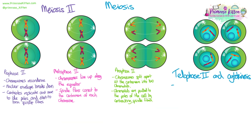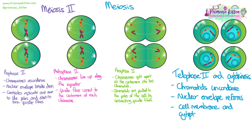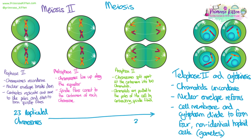Telophase two and cytokinesis: the chromatids start to uncondense, the nuclear envelope reforms, and the cell membrane and cytoplasm divide to form four new non-identical haploid gametes. So meiosis two takes two haploid cells each containing 23 replicated chromosomes and creates four haploid cells that now have 23 non-replicated chromosomes. In each of these is a unique mix of paternal and maternal chromosomes, and copies of chromosomes from the same parent that could have different alleles due to crossing over.